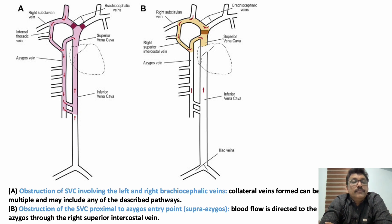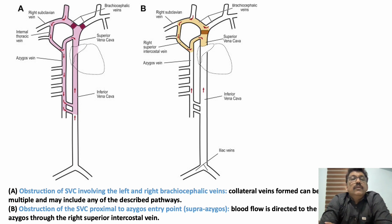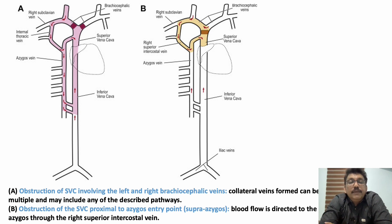The next pattern is obstruction of the SVC proximal to the azygos entry point — supra-azygos obstruction. Here, blood from the upper part of the body can go through the right superior intercostal vein to the superior vena cava, and the upper part of the chest may not develop prominent collaterals.